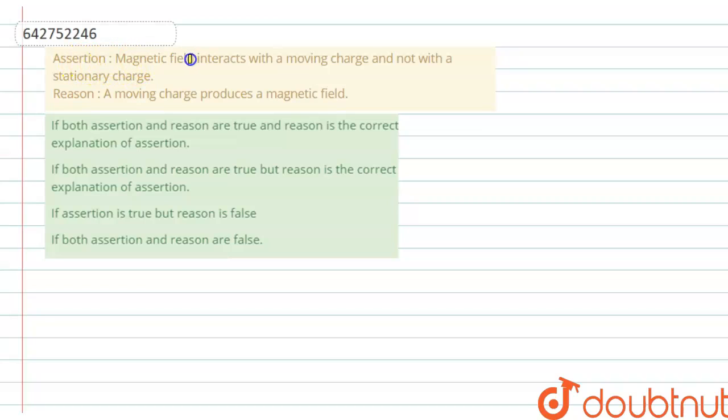Assertion: Magnetic field interacts with moving charges and not with a stationary charge. Reason: A moving charge produces magnetic field.